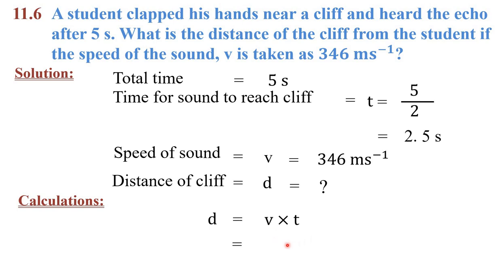Ab isme values put kar lete hain V ki value thi 346 multiplied by time use hoga 2.5. To yeh multiply hone ke baad distance ki value aayegi hai 865 meter.